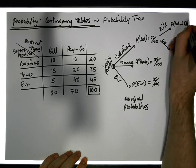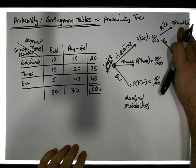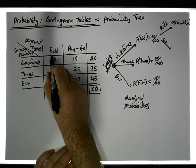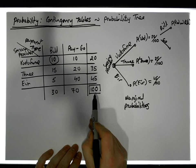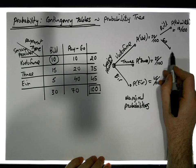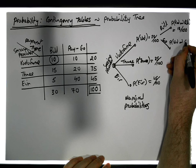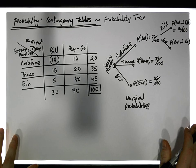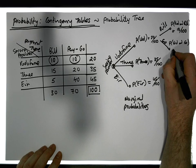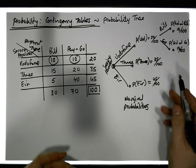Looking at bill pay on the contingency table, we can see there are 10 Vodafone bill pay customers, so the probability is 10 out of 100. For Vodafone customers who are pay-as-you-go, there are also 10 chances out of 100, so that's 10 out of 100 as well.